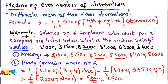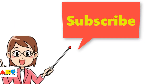To find the median of even observations, you simply find the arithmetic mean of the two central terms. In the next lecture, we will see how to find the median of grouped data. Thank you for watching — please subscribe to our channel for more updates.